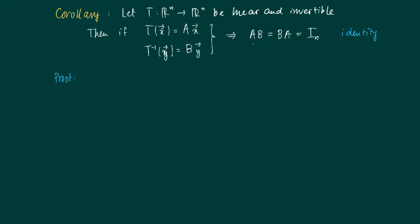Our proof goes as follows: take a vector X, then X is no more than T inverse of T(X), which is no more than B times T(X). We use the fact that T inverse is a matrix vector product and we know that T(X) is A times X. Well, similarly,